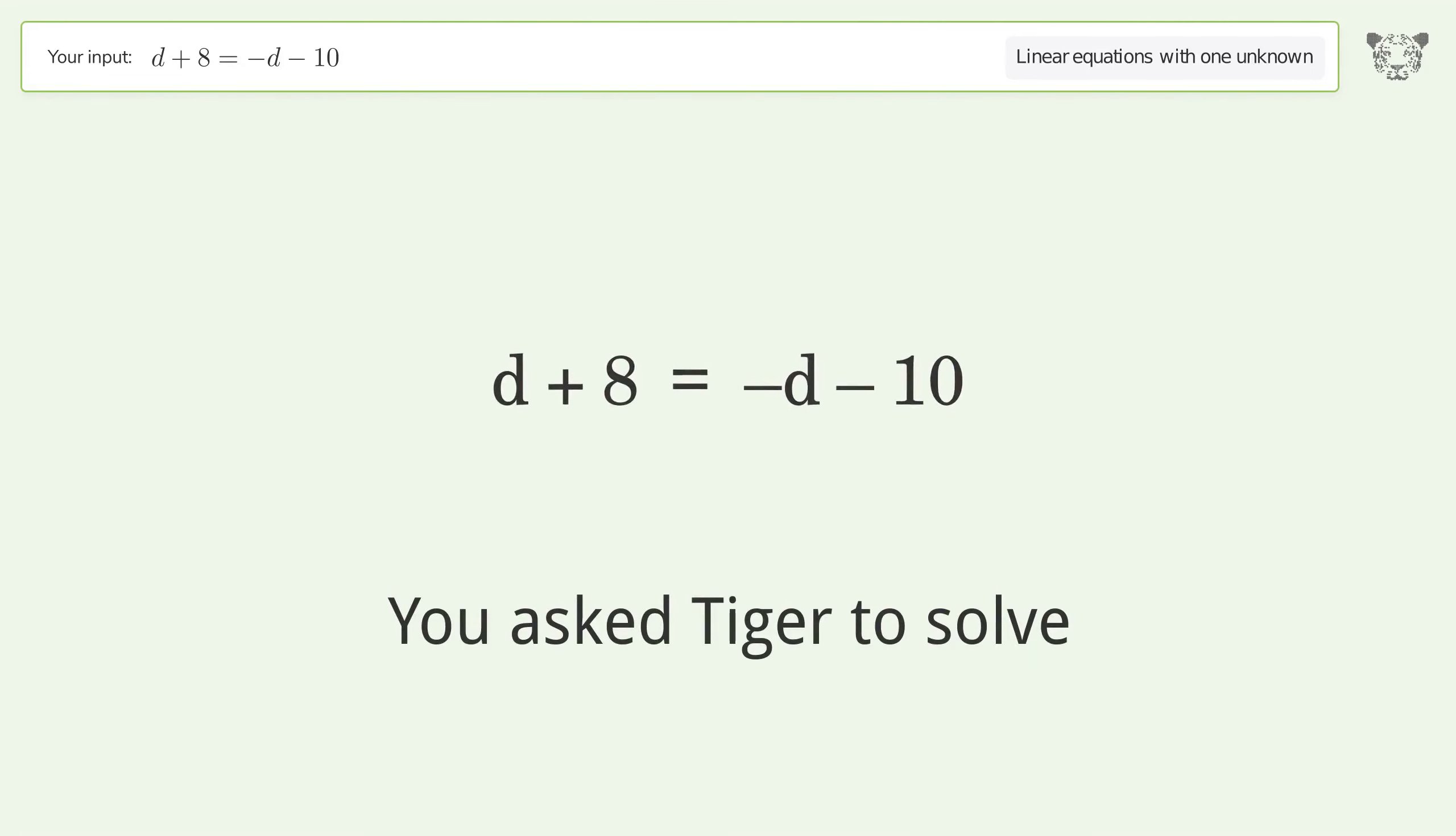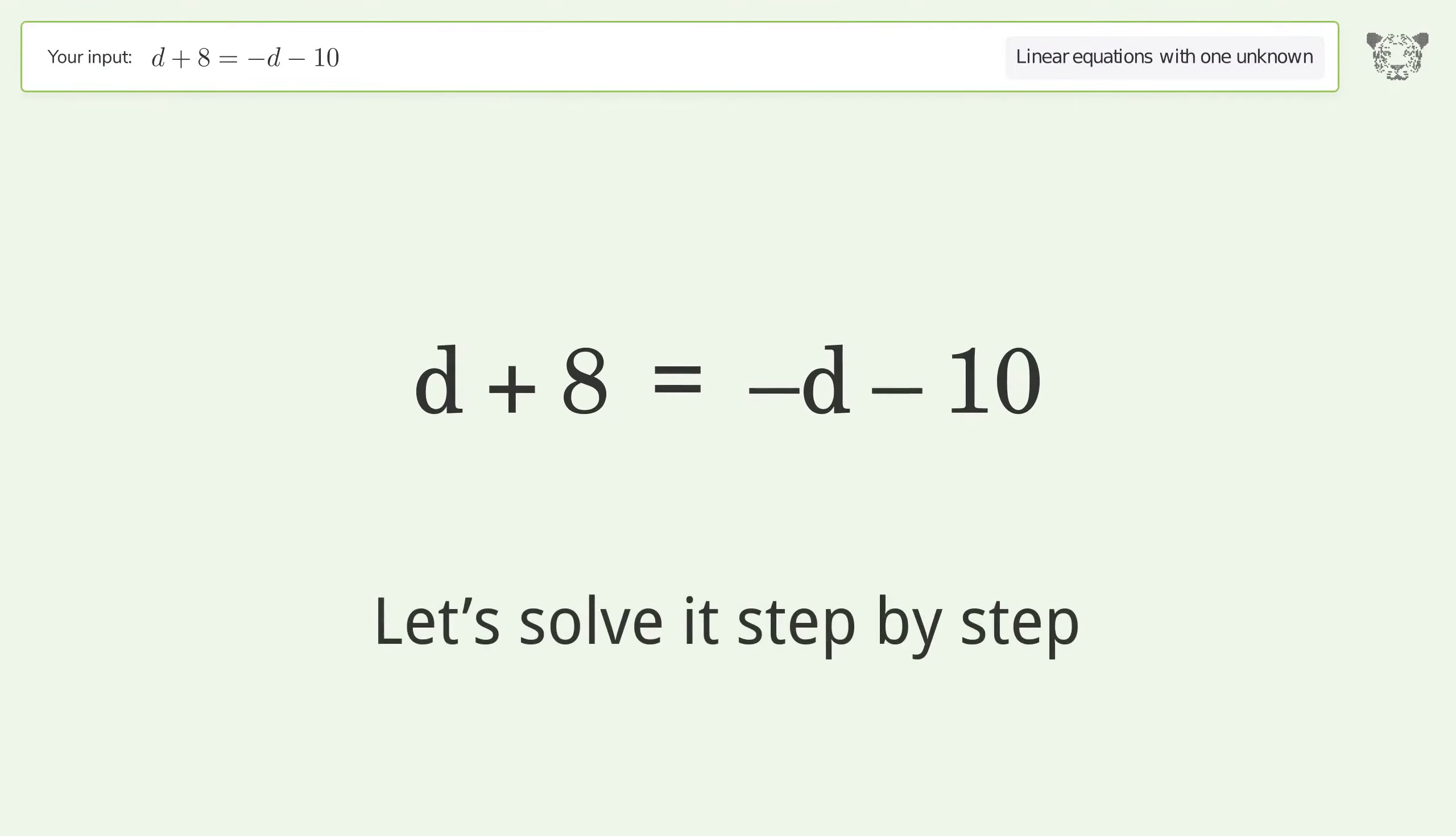You asked Tiger to solve. This deals with linear equations with one unknown. The final result is d equals negative 9. Let's solve it step by step.